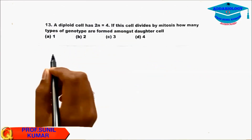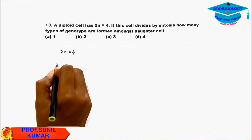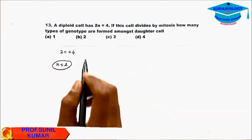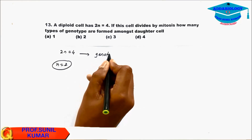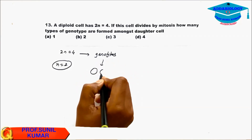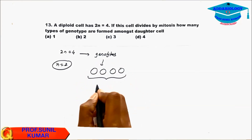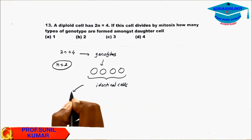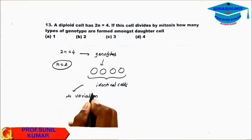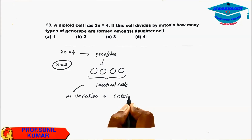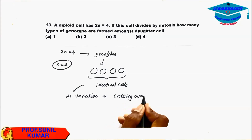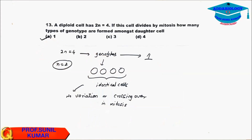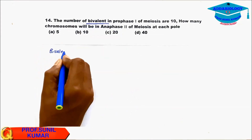Question 13: There is a diploid cell where 2n = 4 and n = 2. What genotype will be formed in mitosis? In mitosis, all cells formed are identical to each other because there is no variation or crossing over. So the genotype present will be the same as the parent.